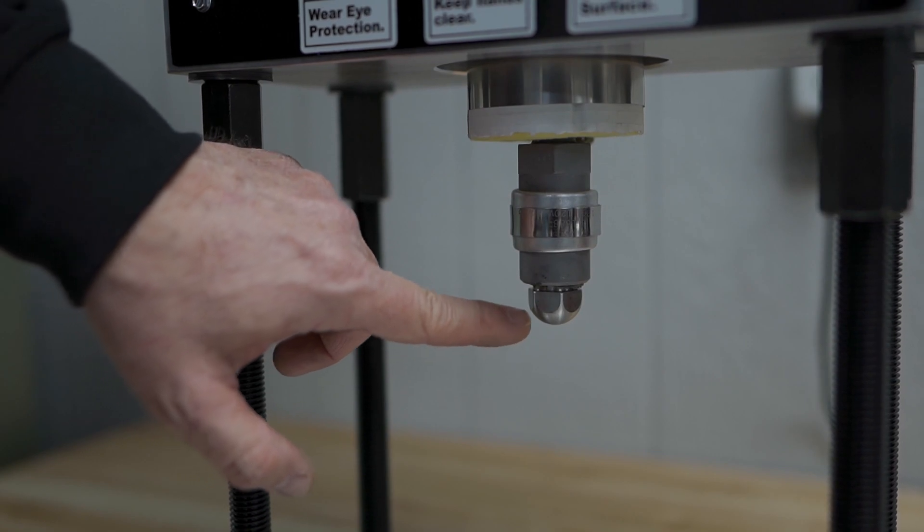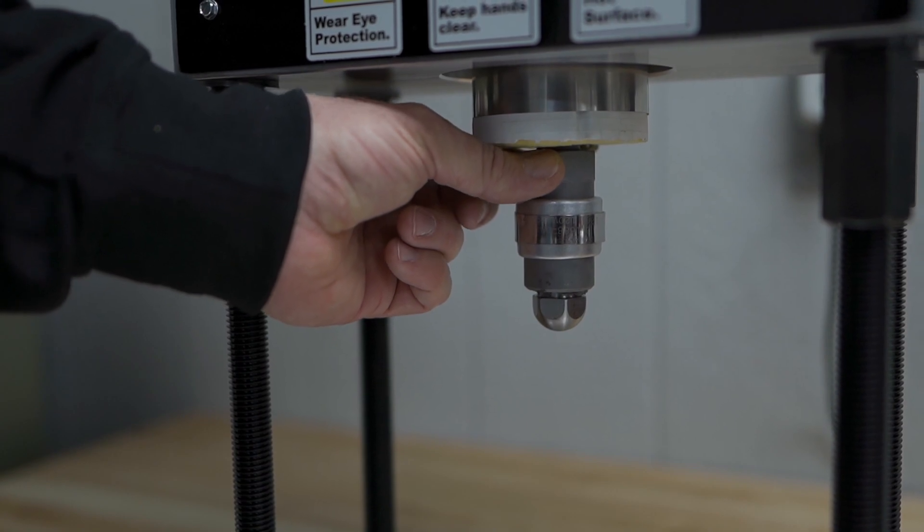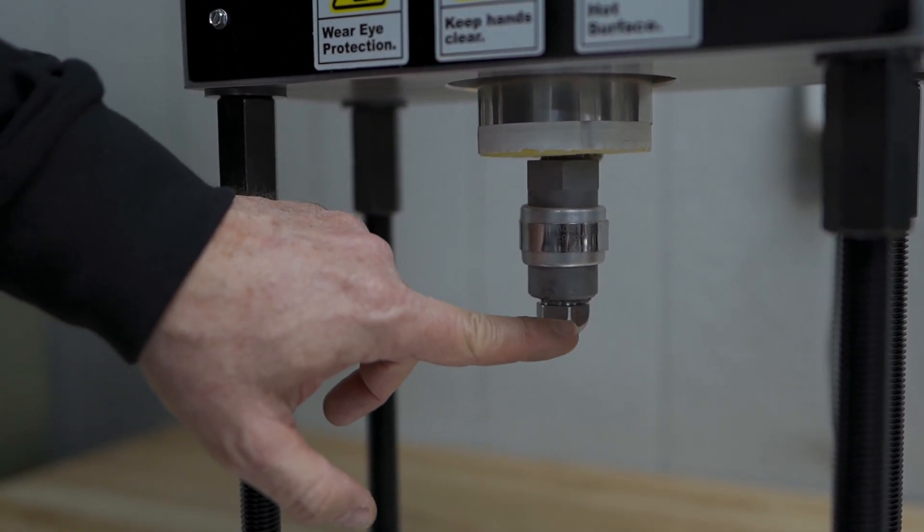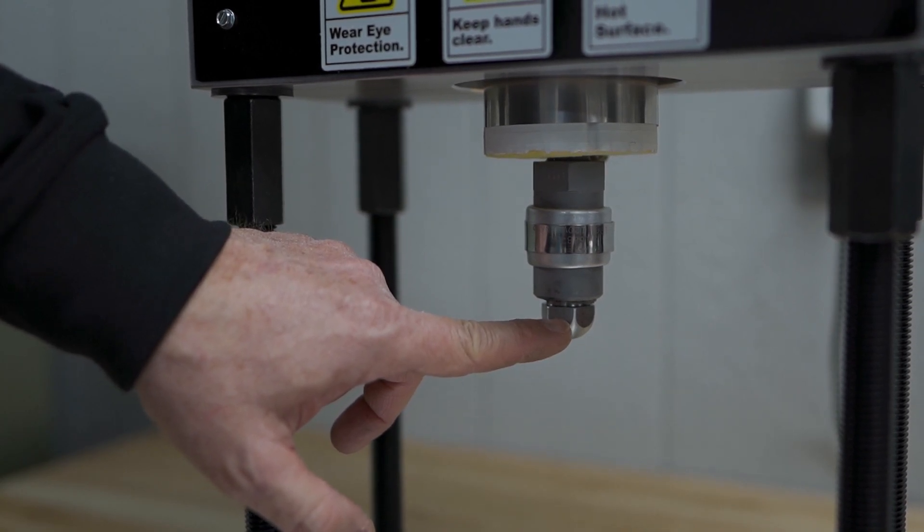So if you want to change tips, what you do is you would use a wrench to make sure this doesn't move. You don't want this one to move. And you would remove this, put in your new tip, and off you go.